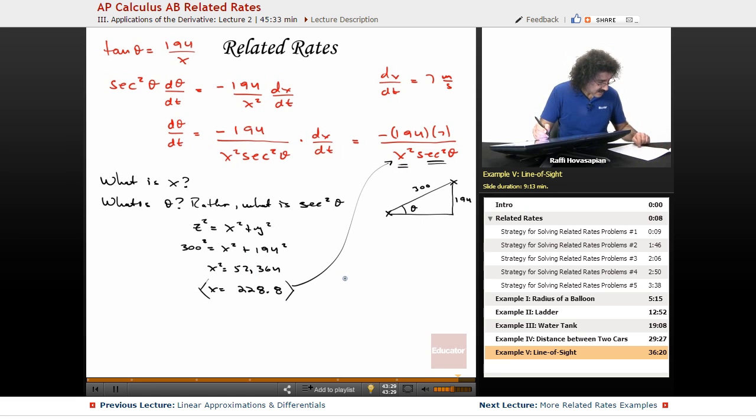We already have x squared, we can just plug that in there. Now, I want secant squared theta. I finished my triangle. So this is 228.8. So here, the secant of theta is equal to 300 over 228.8. Therefore, the secant of theta equals 1.31. Now I can go ahead and plug everything in.